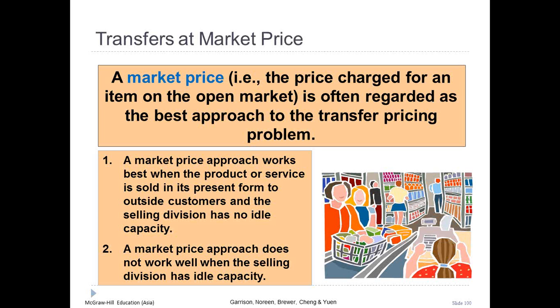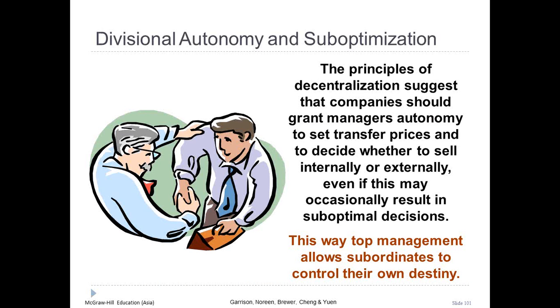The principle of decentralization suggests companies should grant managers autonomy to set transfer prices and decide whether to sell internally or externally. While subordinate managers may occasionally make suboptimal decisions, top managers should allow their subordinates to control their own destiny, even to the extent of granting them the right to make mistakes.